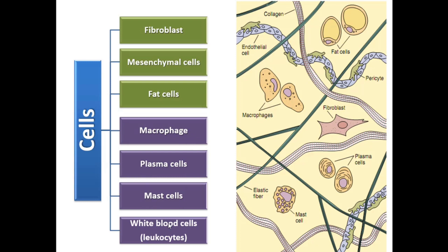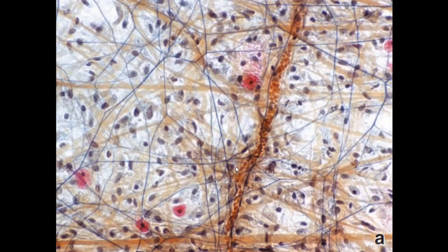These purple cells perform their function in connective tissue and afterwards die by apoptosis, so they are transient or temporary cells. In a real connective tissue picture you can see the nuclei of cells, different kinds of fibers, ground substance, and also a blood vessel inside the connective tissue — we usually have blood vessels in connective tissue.